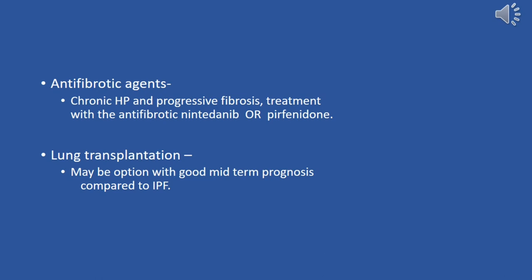In cases of advanced disease with severe respiratory impairment and progressive fibrosis despite medical therapy, lung transplantation may be considered. Lung transplantation may offer a good midterm prognosis compared to idiopathic pulmonary fibrosis, IPF, in select patients who meet transplantation criteria. The decision should be carefully weighed based on disease severity, comorbidities, functional status, and overall prognosis, requiring comprehensive evaluation by a multidisciplinary transplant team.